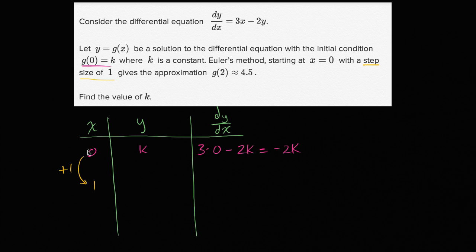Well, if we increment x by 1 and our slope is -2k, that means we're going to increment y by -2k times 1, or just -2k. So k plus -2k is -k. So our approximation using Euler's method gets us the point (1, -k).